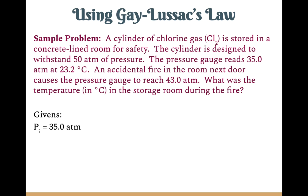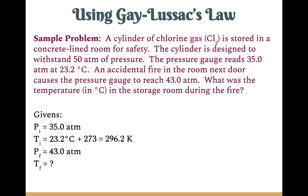So what are we given? Initially the cylinder is at 35.0 atmospheres and a temperature of 23.2 degrees Celsius. The final pressure is 43.0 atmospheres, and the final temperature is what we're trying to find. Both pressures are in atmospheres so they're fine, and the 23.2 degrees Celsius needs to be converted to Kelvin by adding 273, giving us 296.2 Kelvin.